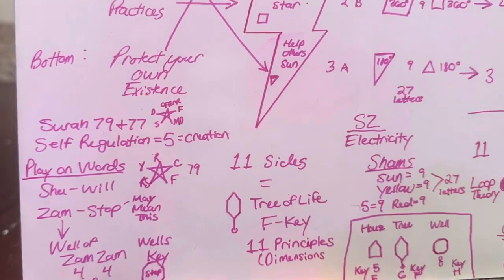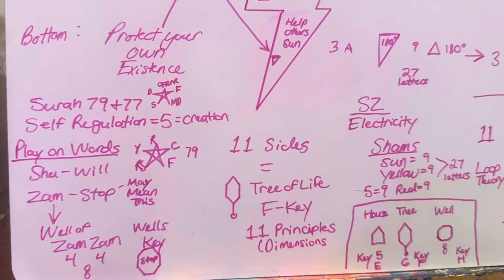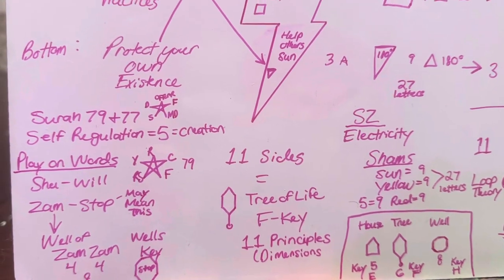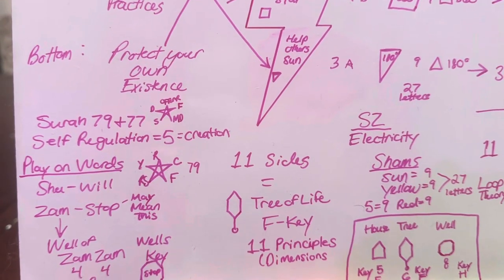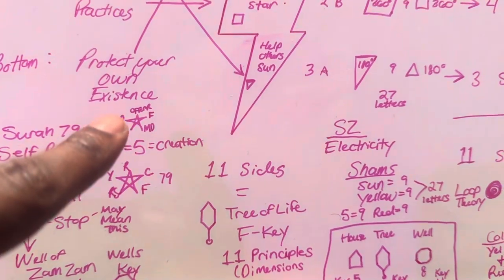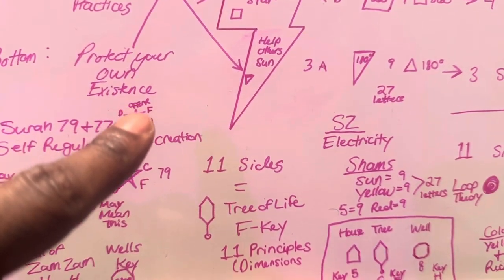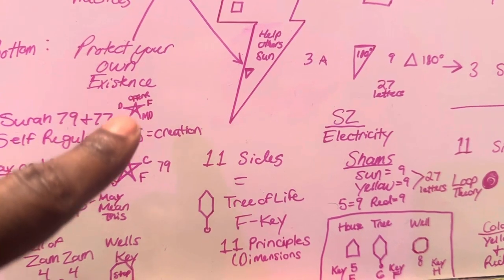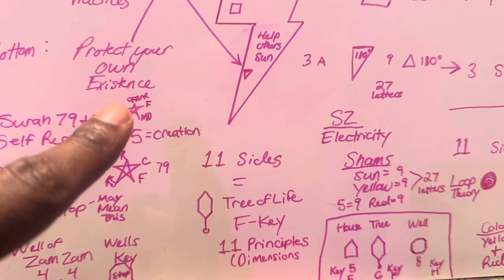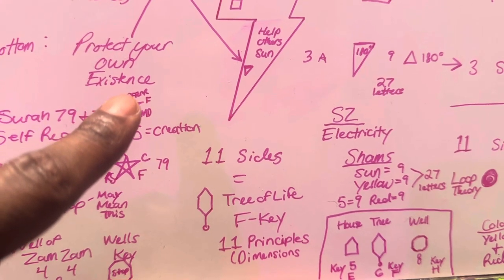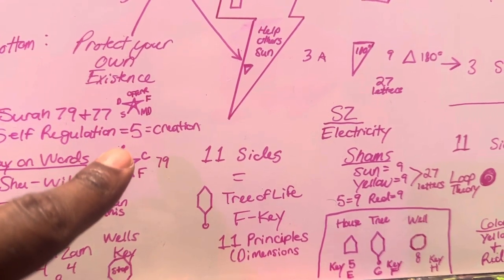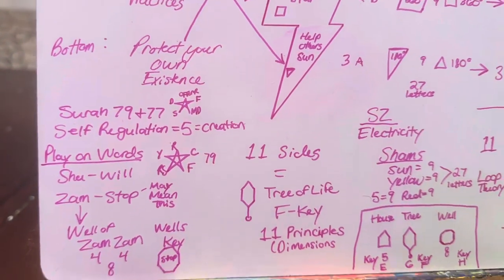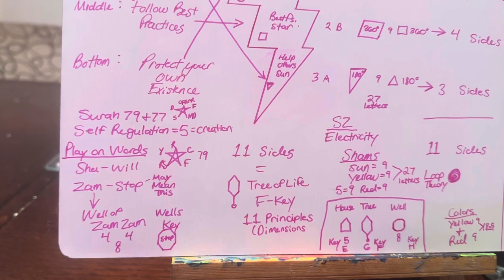And if we go to the 77th surah of the Quran, it'll say, by those sent forth to spread goodness, than those driving off the chaff, than those spreading goodness far and wide, than those offering the reminder to clear or to warn. So these five things are, and that fifth force, notice that offering the reminder to clear or to warn. Notice those regulating the affair. So we know that the number five also equals what? Self-regulation. So learning how to balance those five parts.